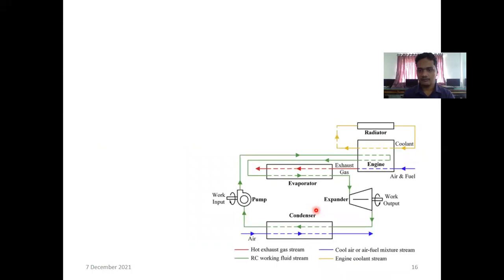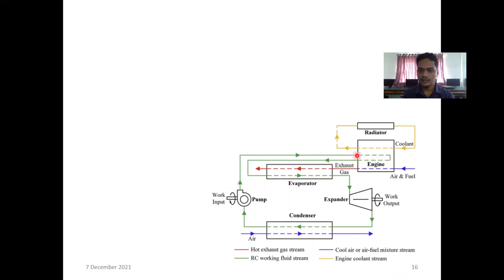Another kind of arrangement: the engine receives an air-fuel mixture and emits exhaust gases. Here, the pump line is directly connected to the engine setup. Since the pump line is directly connected to the engine, we are already supplying hot water, which means we are reducing the heat supply required. This makes it somewhat more efficient compared to the other arrangements. We then expand in the turbine and proceed to the condenser.